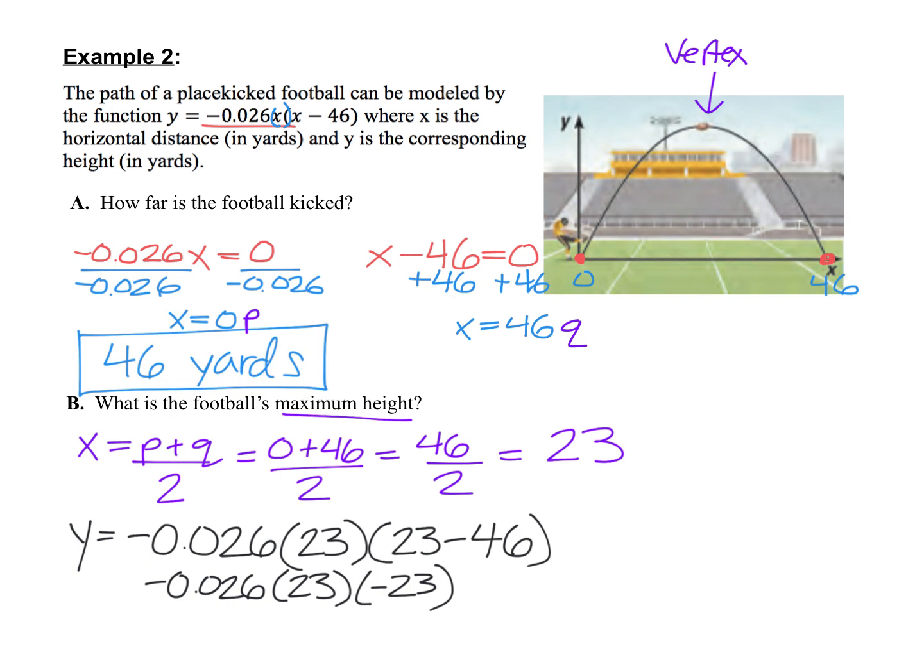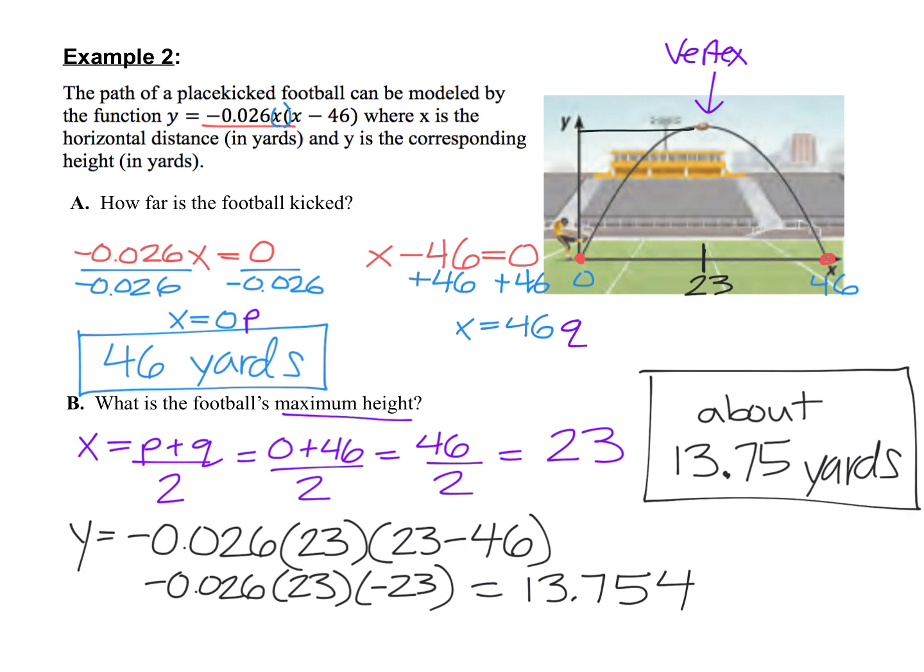And now I'm taking my graphing calculator, and I'm multiplying those three numbers together. So negative 0.026 times 23 times negative 23. And I'm typing in the parentheses exactly how they look right here. Hitting enter on my calculator, it gives me 13.754. So that would be the maximum height of the football. It doesn't say what to round to, so I'm just going to round to two decimal places. So let's say it's about 13.75 yards for the maximum height. Again, that maximum height is just the y-value of my vertex. The 23 is the x-value of my vertex, kind of halfway in the middle between my 0 and my 46. The y-value of our vertex would correspond with 13.75. So the football ends up with a maximum height of about 13.75 yards.